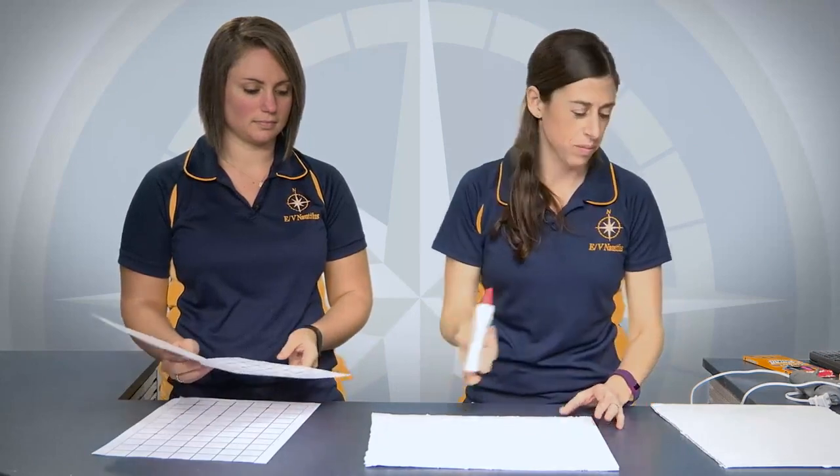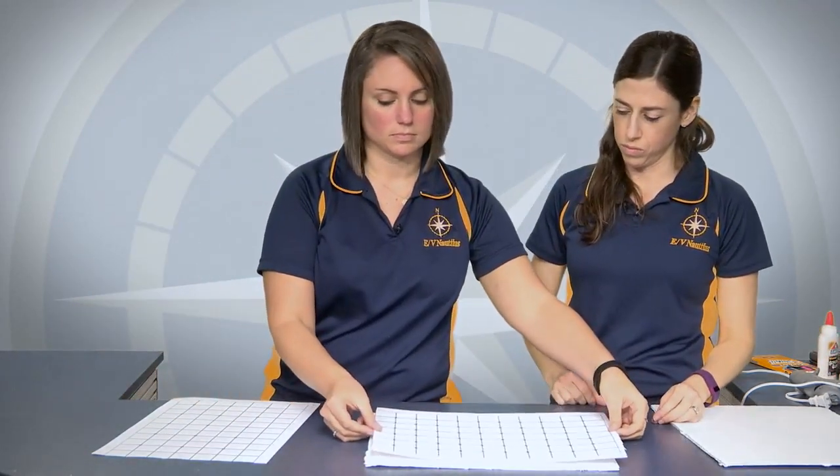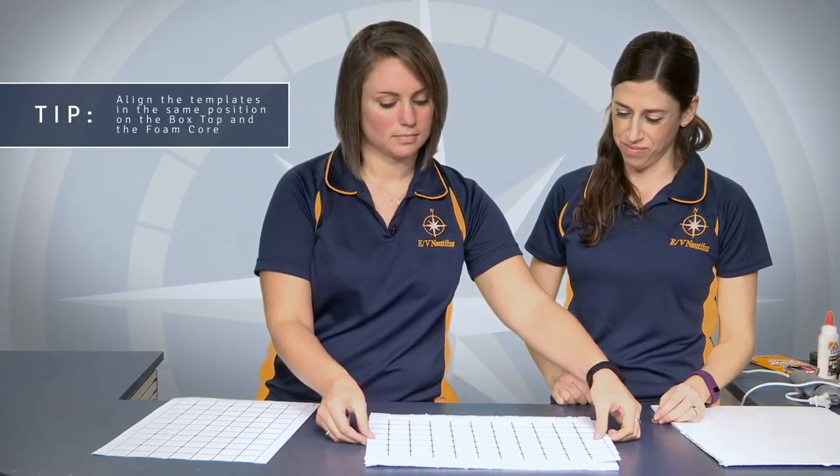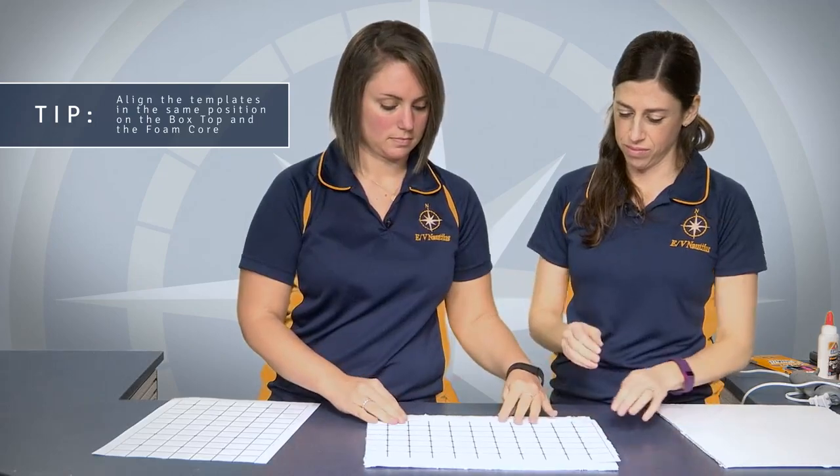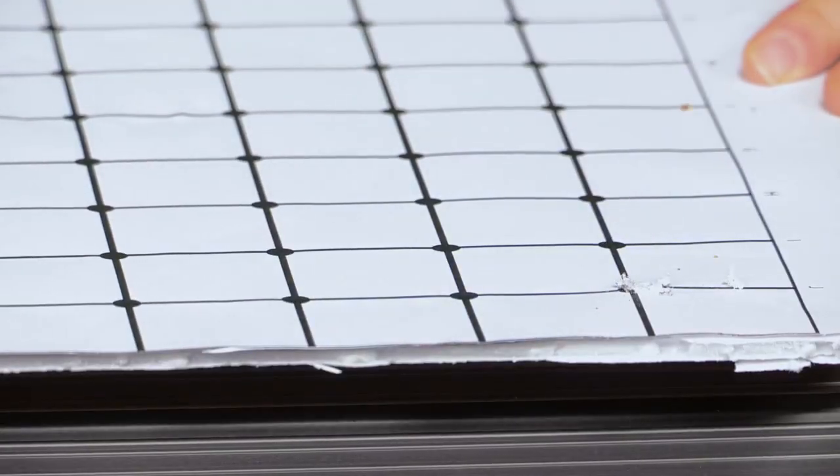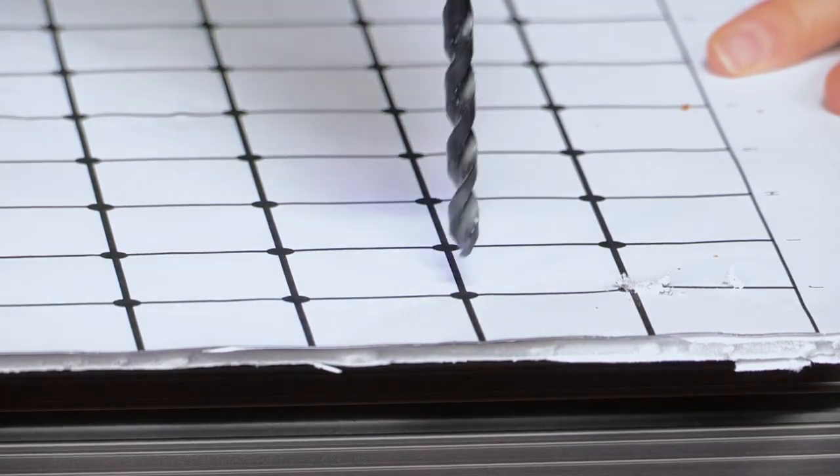Tape or glue the high resolution template to cardboard or foam core the same dimensions as the box top. Take care to align the templates in the same position on both the box top and the foam core. Drill holes at every intersection where grid lines meet. Make sure you have a drill bit slightly larger than the wooden dowel.